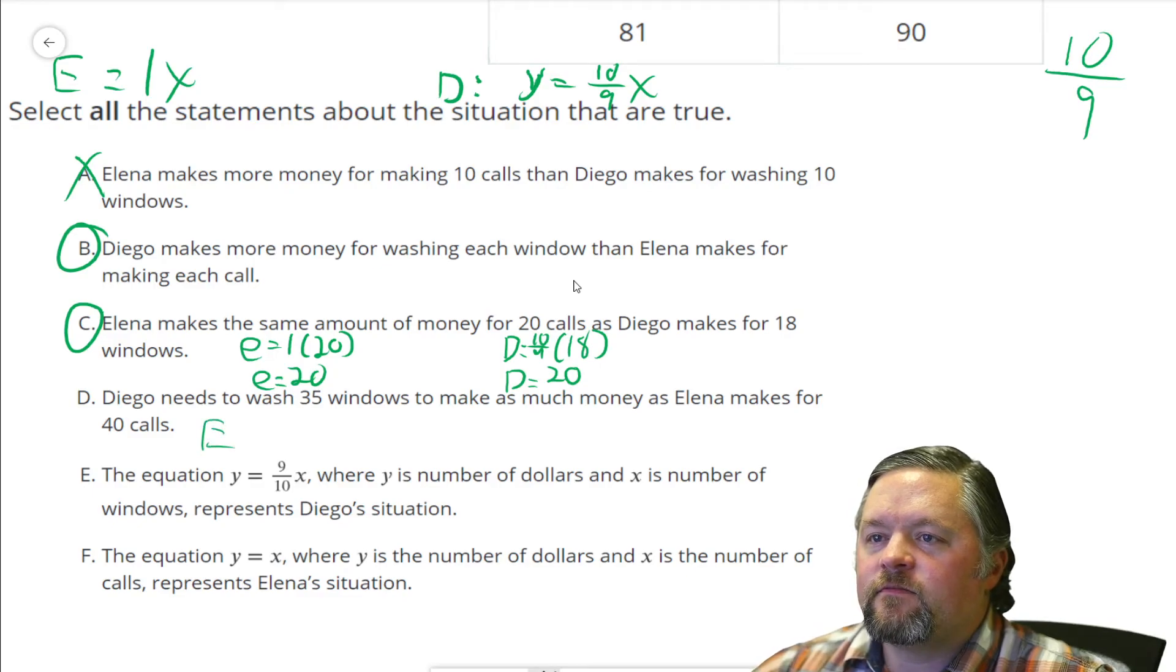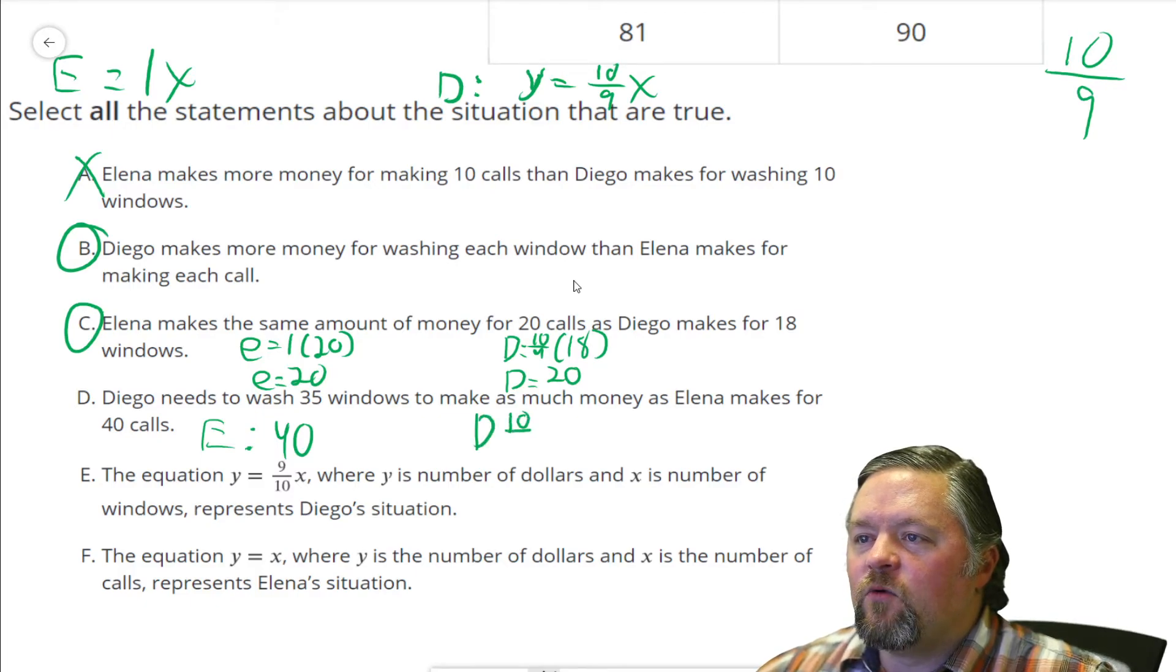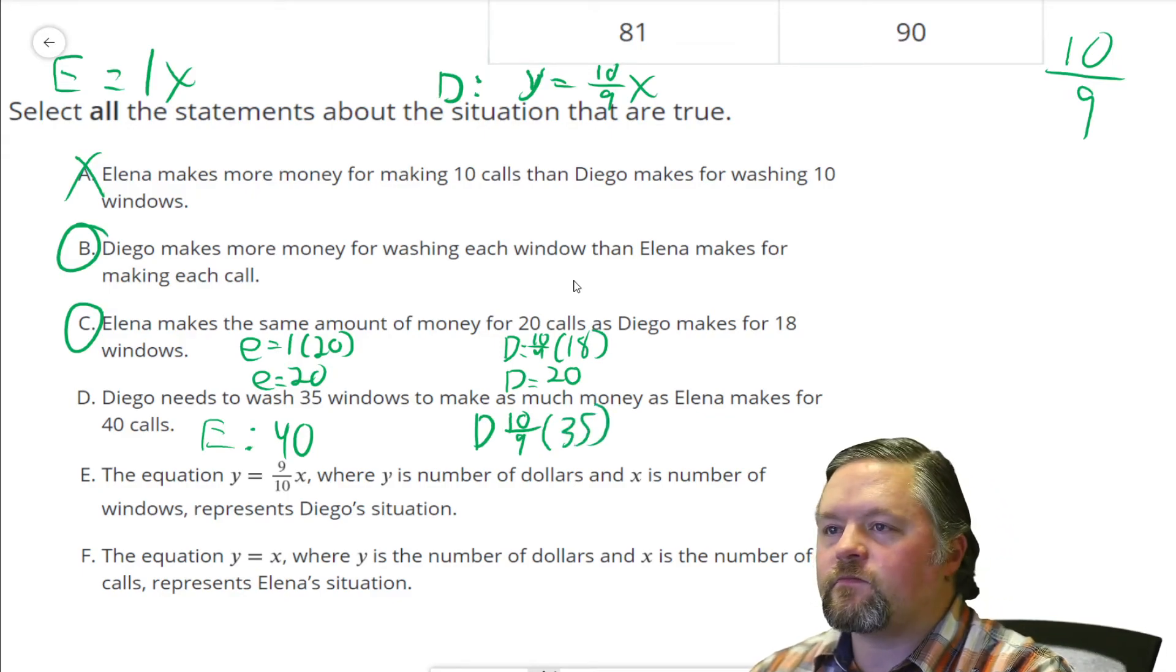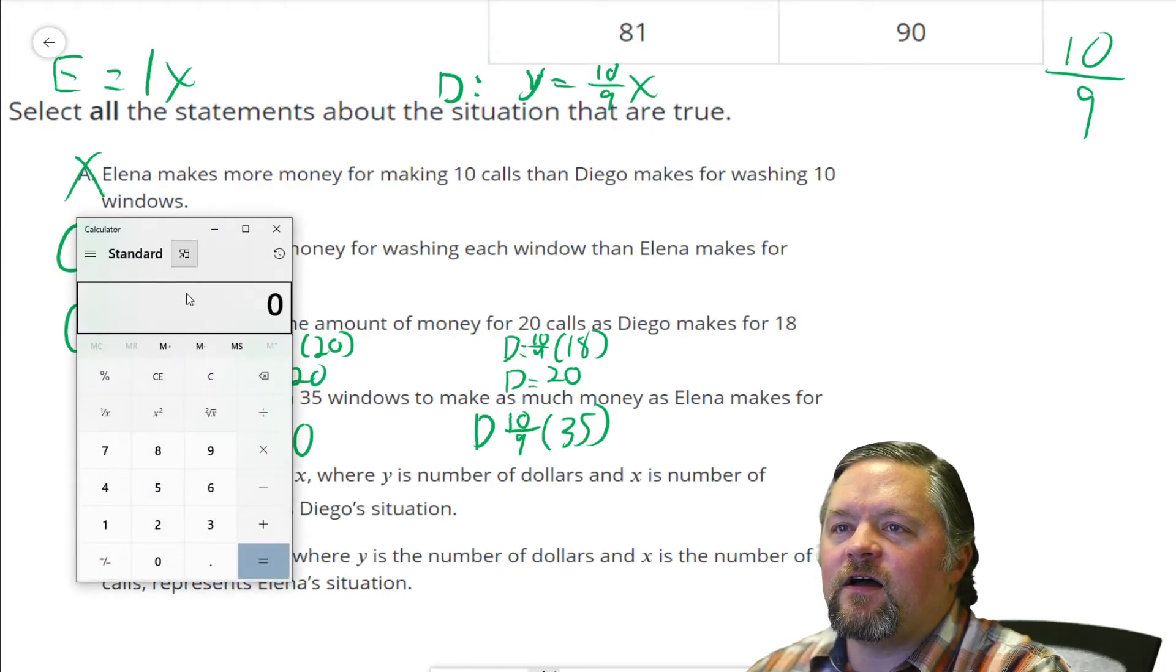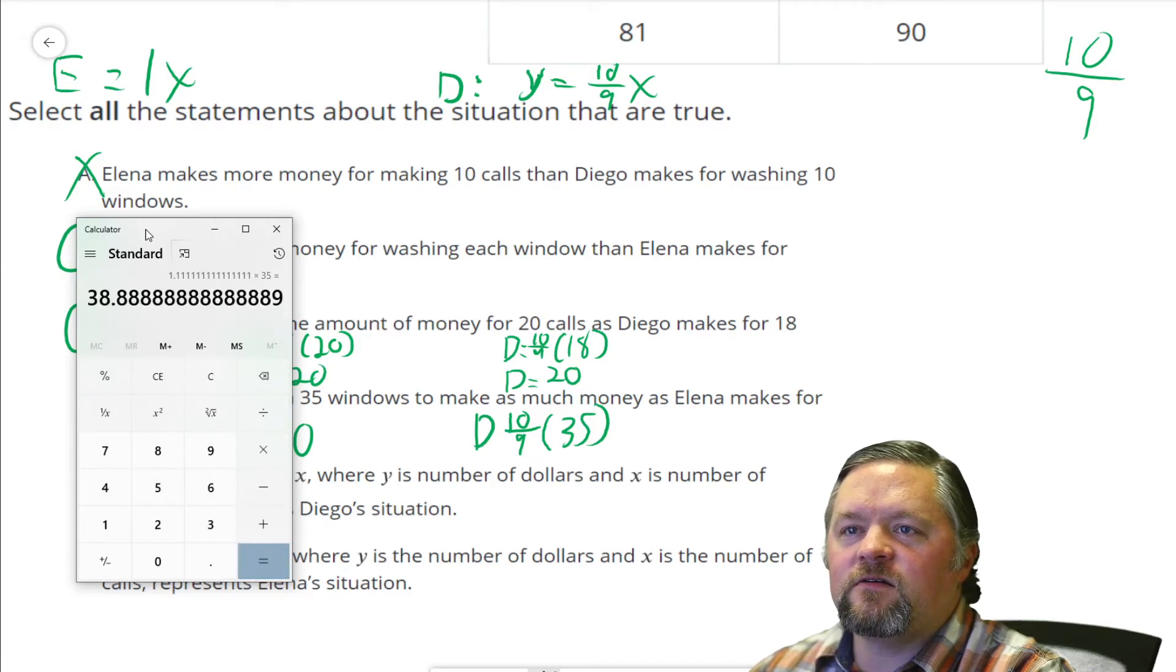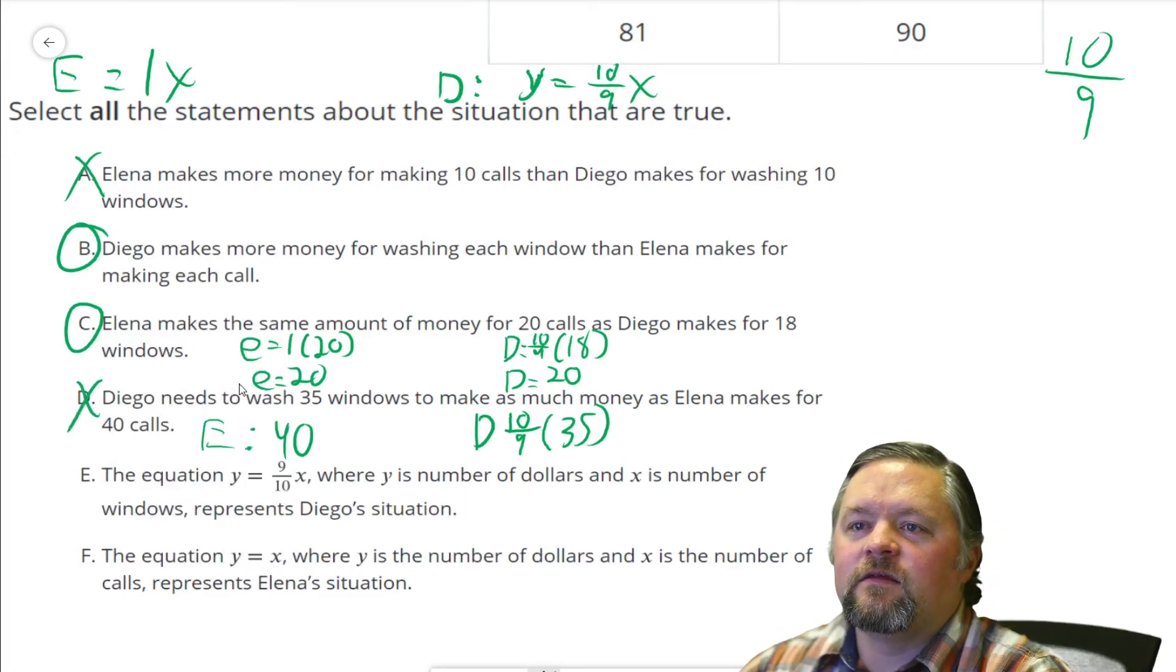Diego needs to wash 35 windows to make as much money as Elena makes for 40 calls. So Elena makes $1 per call, so Elena's going to make $40 for making 40 calls. Diego makes 1 and a 9th, and he's supposed to be making 35 calls. 10/9ths times 35, 1.1 repeating times 35 calls. Well, that's not a 40. That's not a 40 at all. They don't make the same amount.